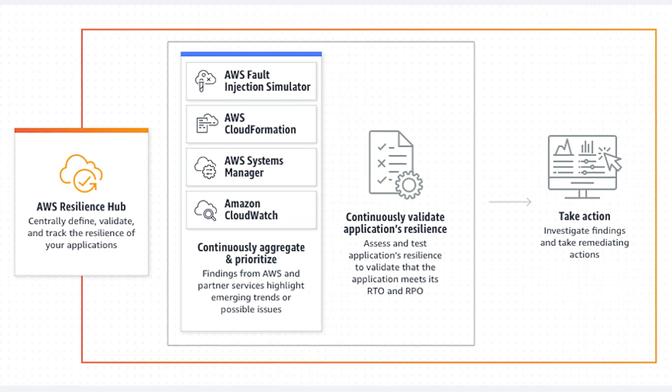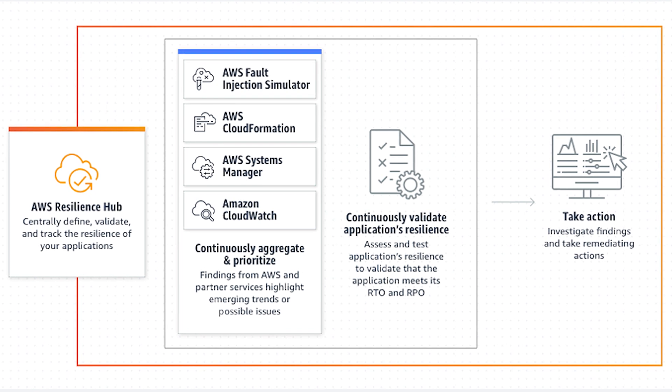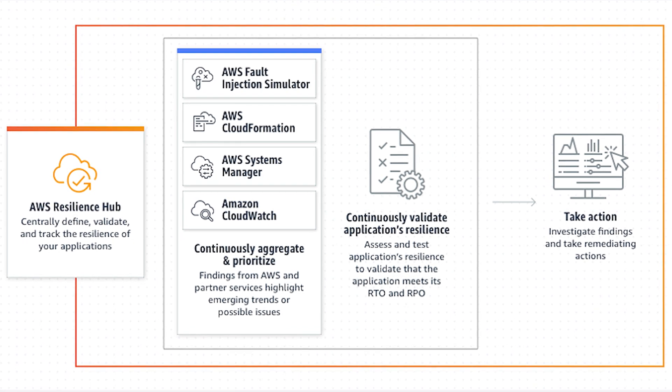There are lots of new updates to AWS Resilience Hub. Resilience refers to the ability of your applications to maintain availability and recover from disruptions within a specific RTO and RPO. Resilience Hub provides a central location to define, validate, and track the resilience of your applications to prevent any downtime caused by software, infrastructure, or operational disruptions.